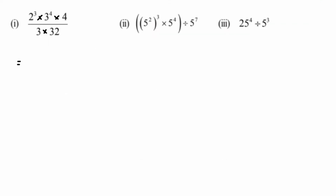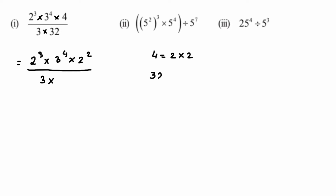Let's begin with the first question. We have a numerator and denominator, so we're going to write this in simplest form and apply the laws. We have 2 to the power 3 multiplied by 3 to the power 4. Instead of writing 4, I'm writing it as 2 into 2, which is 2 squared — remember 4 equals 2 into 2. We also have 32, which equals 2 to the power 5.